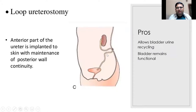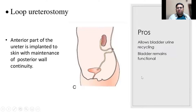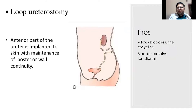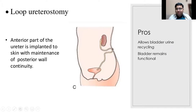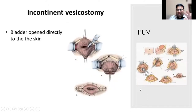There is a loop ureterostomy where you open one layer as a stoma and maintain the other layer of the ureter, keeping some urine cycling so the bladder stays wet. A dry bladder - if urine is diverted away - has less chance of becoming functional if you attempt a later reconstituting procedure. This is used in pediatric patients as well.